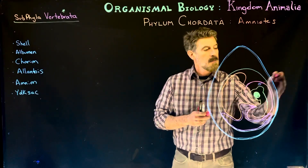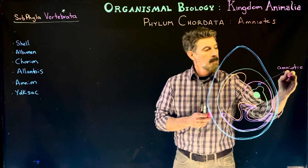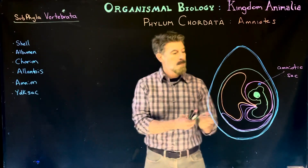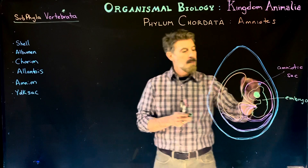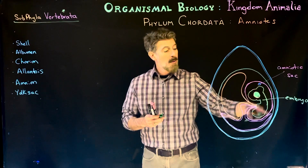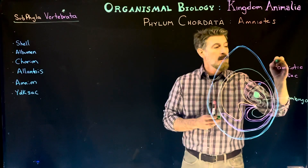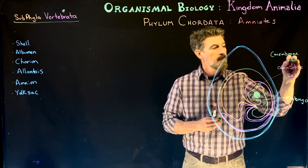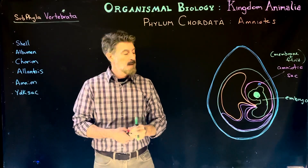The amniotic sac contains the embryo — this little guy here represents a vertebrate embryo — and there's fluid filling the sac called amniotic fluid. The membrane itself is the amniotic membrane. So the amniotic sac is the membrane and the fluid combined, and the embryo is suspended in that fluid.